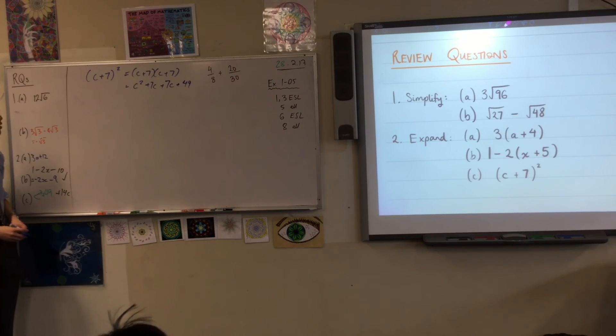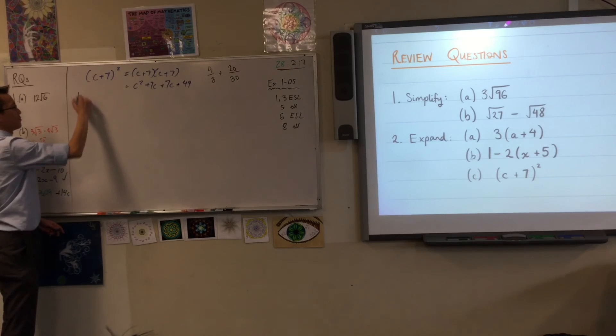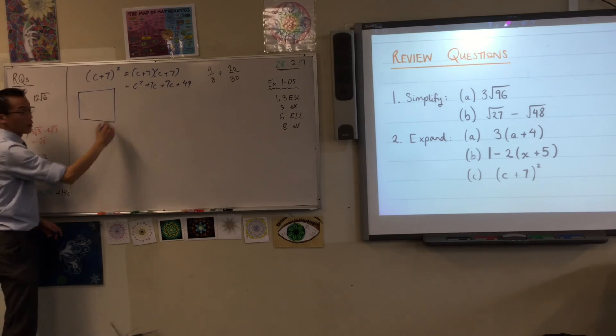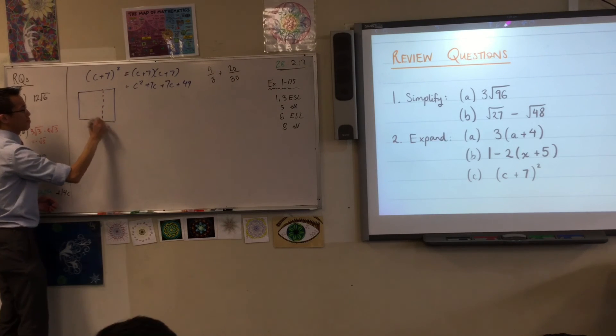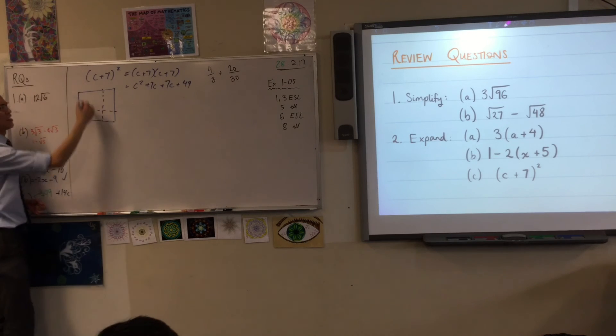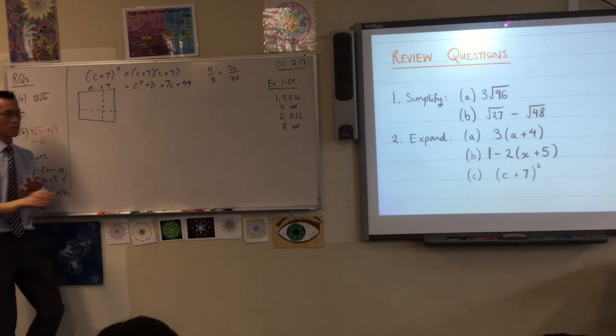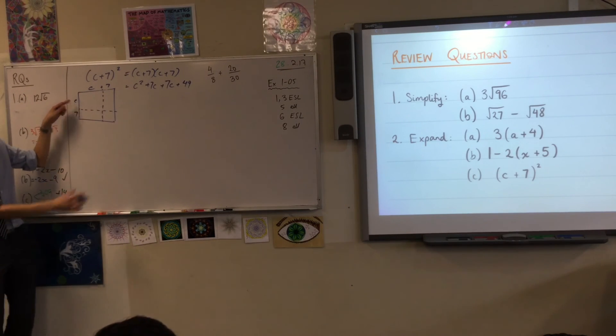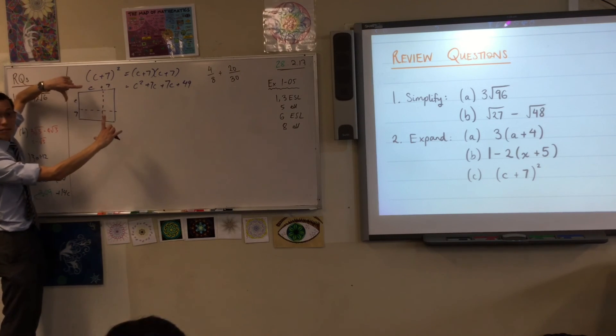There's one other quick way that you can convince yourself, some of you have seen this before. C plus 7, all squared. We call it squared because you can draw it with a square. Let me just show you what C plus 7 all squared would look like. C plus 7. A C part and a 7 part. Is that okay? C part, 7 part. Like that. Do you agree that this picture is C plus 7 squared? Is that okay?